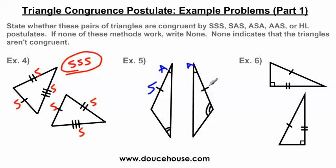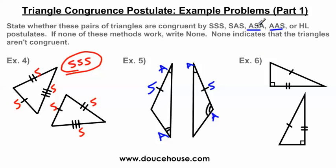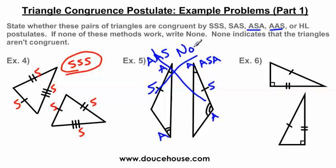Moving on to number five: this angle is congruent to this angle, this side is congruent to this side, and this angle is congruent to this angle — two angles and a side. However, on one triangle this side is not between the two angles, making it a non-included side, which would be angle-angle-side. But on the other triangle the side is directly between the two angles, which is angle-side-angle. Since these conflict, I cannot prove these are congruent, so I write none.